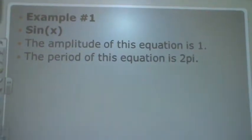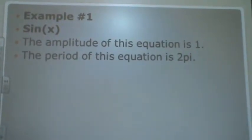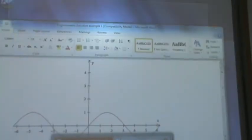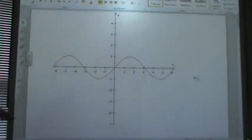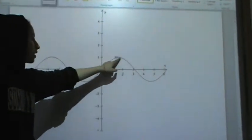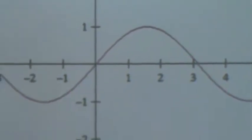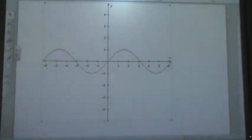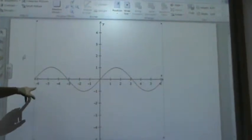Example 1, the sine of x. I found that the amplitude of this equation is 1 and the period of this equation is 2 pi. Let me show you why. This is the function and as you can see, the two points are at 1 and negative 1 which makes the amplitude to be 1, and also you can see that the period is from 6.28 which is 2 pi.